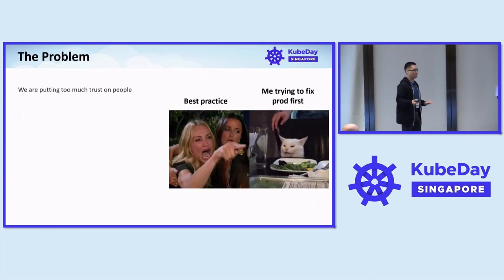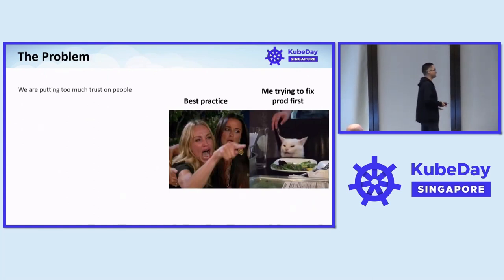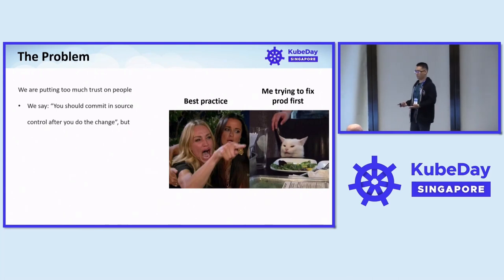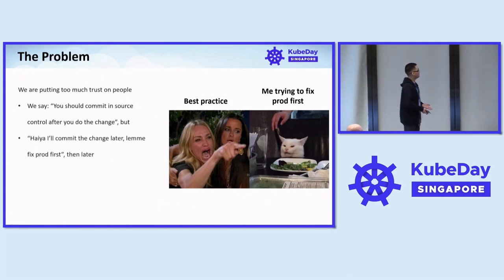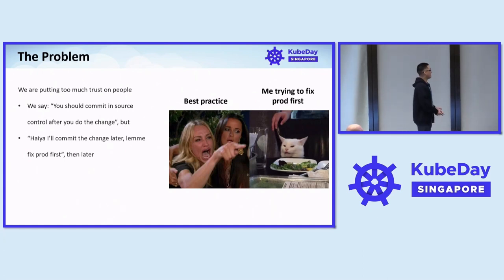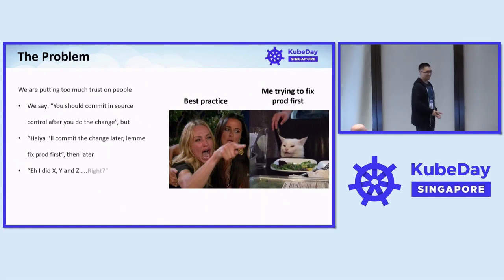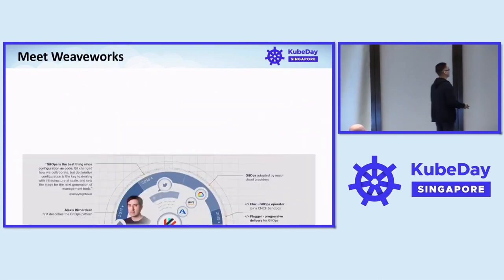The problem is we are putting too much trust on people. We say: you should commit to source control after you make changes. But people think, let me just fix prod first, then I'll commit the change later. And then: hey, I did X, Y, Z, right? Right?